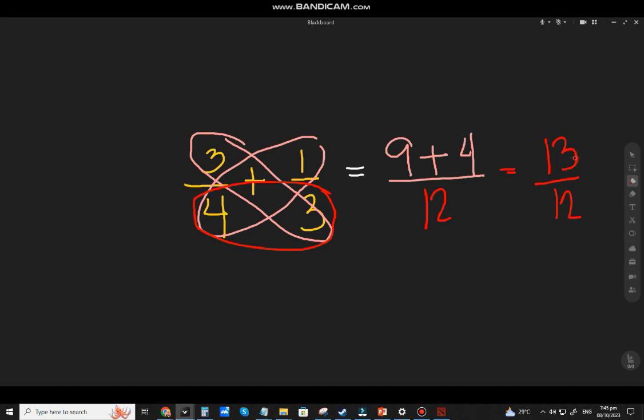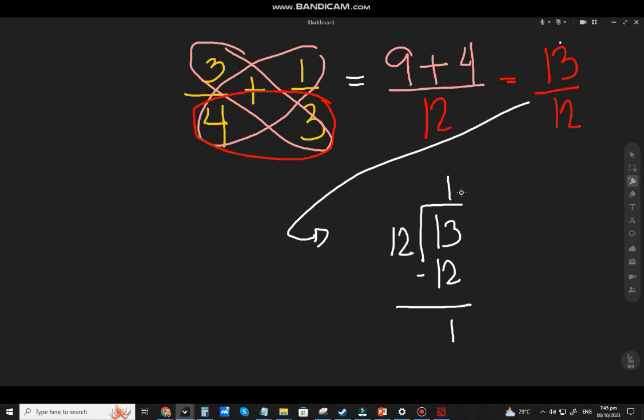Now, depending on your teacher, most of our teachers want to be mixed number. Improper fraction. Improper fraction, if the numerator is higher or equal to the denominator. So this will be 13 divided by 12. It will be 1. So minus that. And remainder 1.